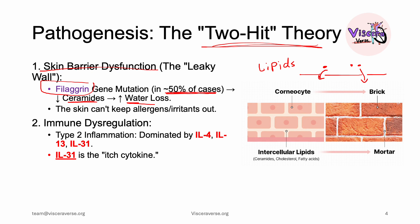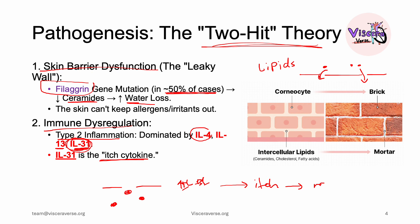That takes us to the second hit: immune dysregulation. We have type 2 inflammation here, dominated by interleukin-4, interleukin-13, and interleukin-31. Interleukin-31 is the key problem because it's the itch cytokine. Patients with leaky skin have a lot of interleukin-31, which causes intense itching, eventually leading to rash formation.